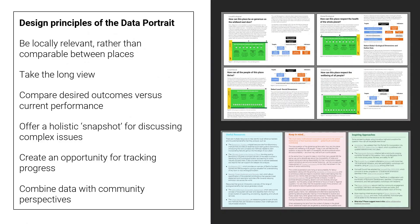It's worth highlighting the principles guiding what the data portrait has and has not been designed to measure, so that you can assess whether it fits your needs. First: be locally relevant rather than comparable between places. There are many initiatives that aim to create comparisons between places, and these can be very useful to understand a given place's performance in a wider context. But what's often lost in such comparisons is the rich local specificity of a place and the relevance of its historical and cultural context, all of which can be crucial entry points for transformative action.